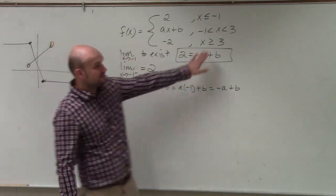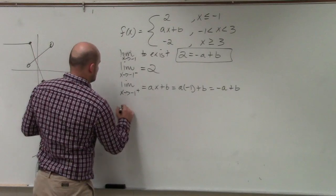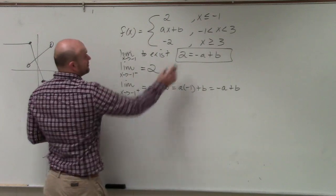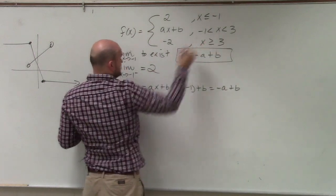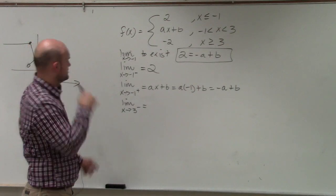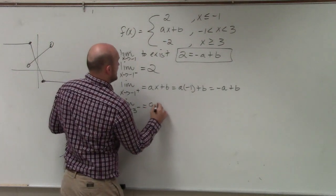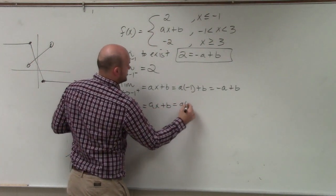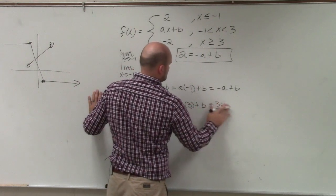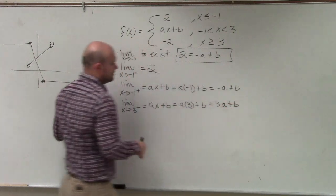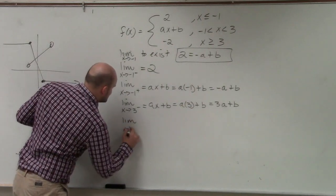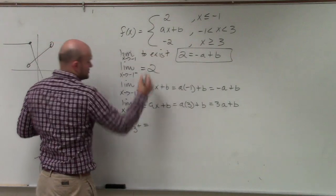Now, let's look at the next break-even point. At three, the limit as X approaches three from the left. So three from the left is going to be AX plus B. Evaluate for the limit at three.